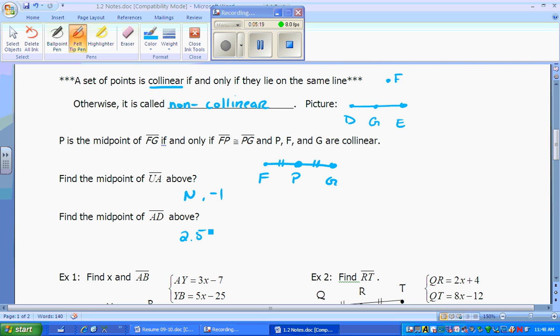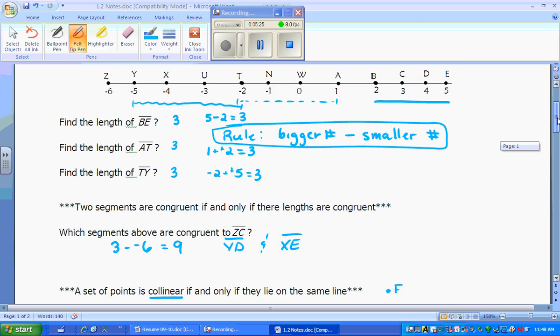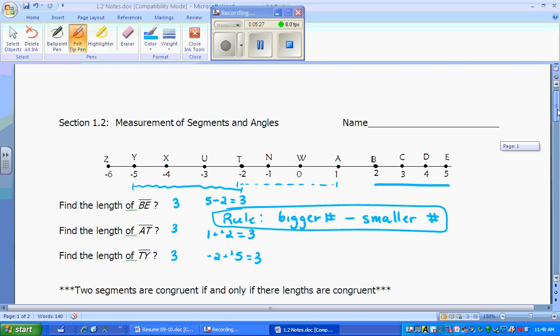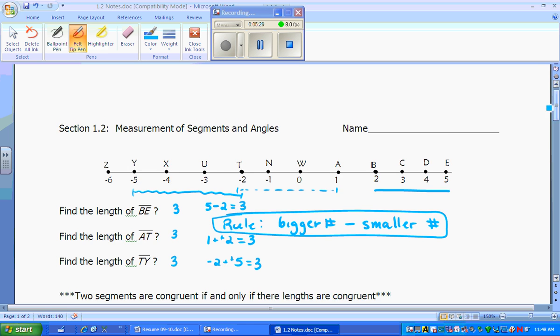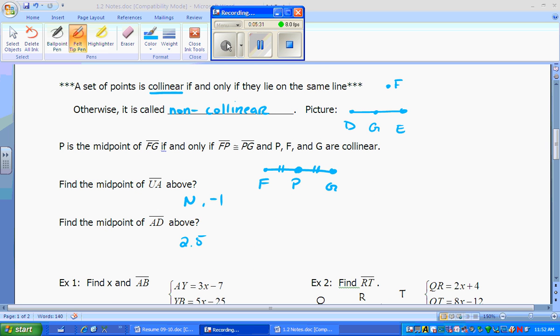Well, how do you figure that out without having a number line? Well, what you would do here is you would find the average of the two. So to find the length of U, A, you can take the two numbers. A was at 1. You could add the negative 3 to it. And then you could divide by 2.